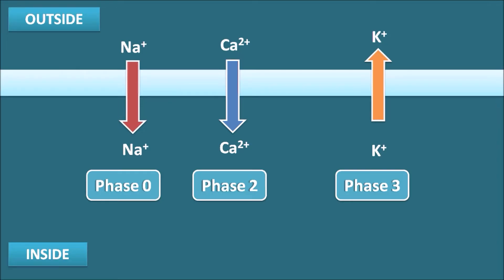In this way, ions enter and exit the cardiac membrane to bring about depolarization and repolarization. But once the action potential is complete, how are these ions restored? Sodium and calcium enter into the membrane while potassium goes outside. They must be restored — sodium and calcium going out and potassium coming back in — in order to generate another action potential.